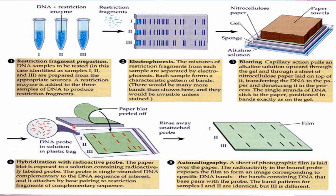Next is hybridization with a radioactive probe. The paper blot is exposed to a solution containing a radioactively labeled probe. The probe is a single-stranded DNA complementary to the DNA sequence of interest, and it attaches by base pairing to the restriction fragment of complementary sequence. Unattached probe is then rinsed away. Later, autoradiography is done — a sheet of photographic film is laid over the paper. Radioactivity in the bound probe exposes the film to form an image corresponding to the specific DNA bands containing DNA that base pairs with the probe.